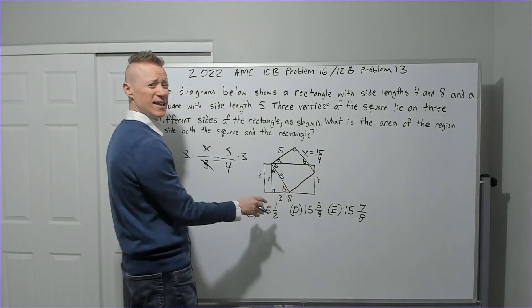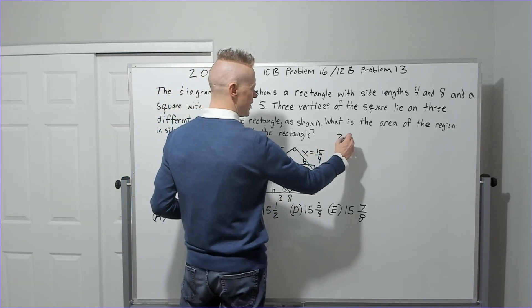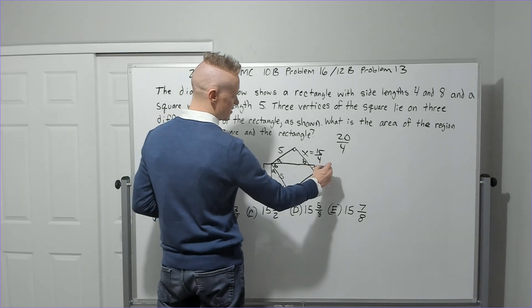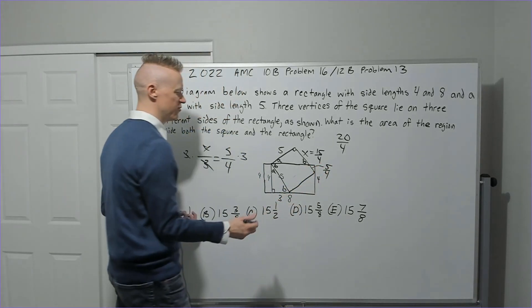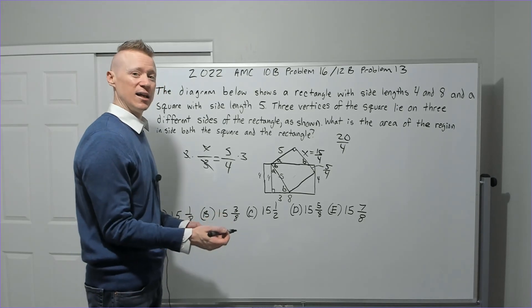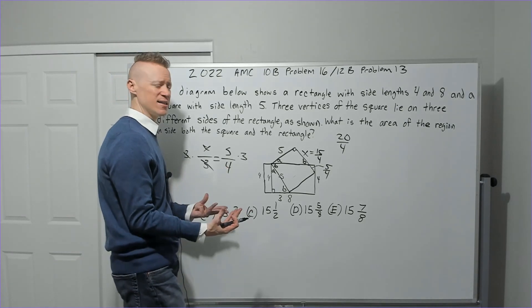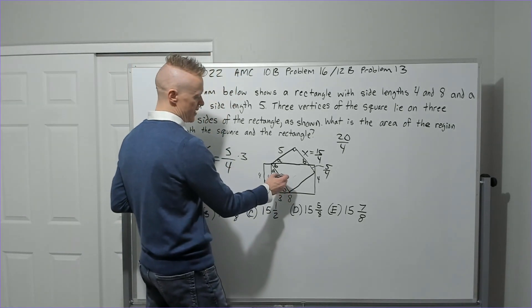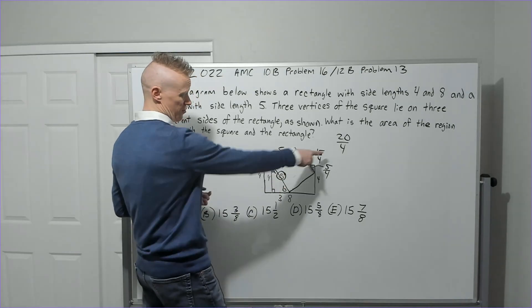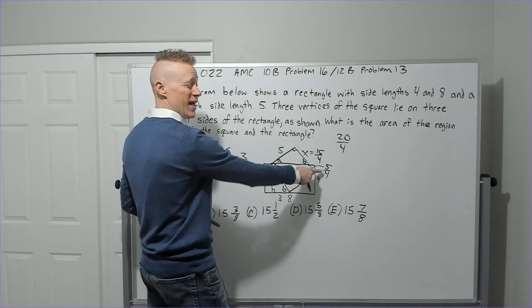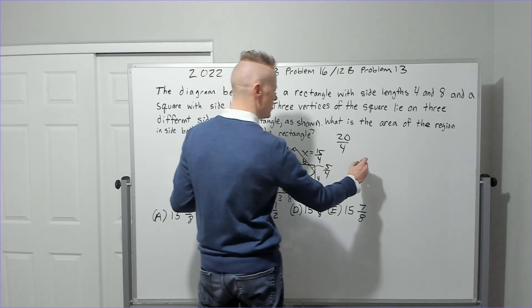Since the whole thing is 5, 5 would equal 20 over 4. That means this piece is 5 over 4. So now we can utilize the average of the bases times the height. I'm going to make this 20 over 4 like it says here. That way I can add them and divide by 2 easier.